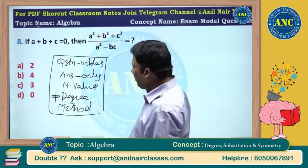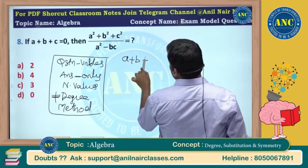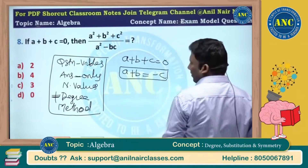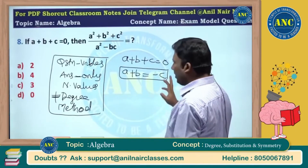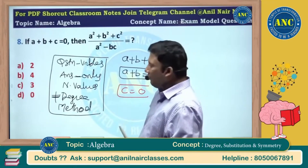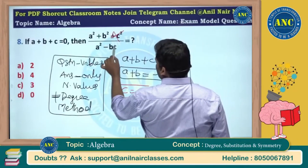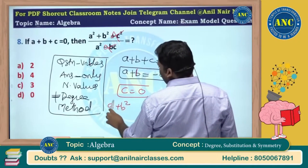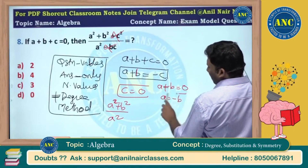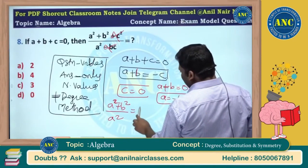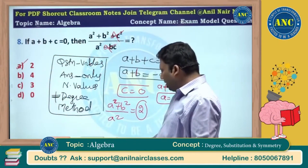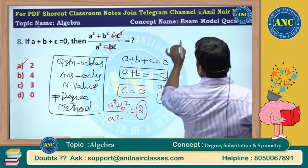Since degree 2 over degree 2 gives degree 0, all constants have degree 0. So a plus b plus c equals 0, meaning a plus b equals minus c. The dependent variable here is c. Make c equal to 0. Then a equals minus b, so the expression becomes b² plus b² divided by b², which is 2b²/b² — the answer is 2.